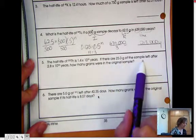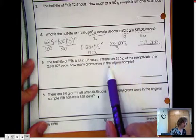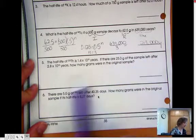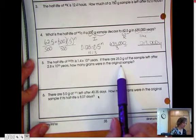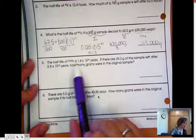If there are 25 grams of the sample left after 2.8 times 10 to the 10th years, how many grams were in the original? So we're solving for the initial amount. But let's look at the part where we solve for n.